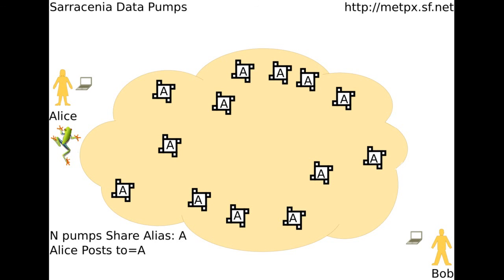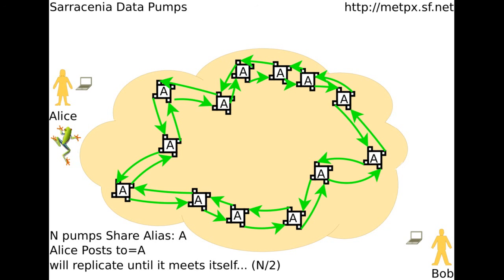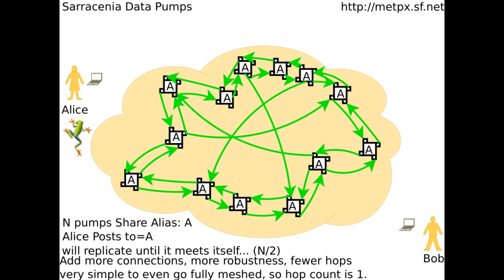In Saracenia, pumps can answer to more than one name. In this diagram, all the pumps answer to A as an alias. If Alice posts to A, the folder goes to all the pumps. Each pump just announces for its neighbors and propagates from pump to pump. In general, the more links are added, the fewer hops are needed to cover all the pumps. Copies happen from the first neighbor to get the data, and flow naturally over the fastest path, going wherever it hasn't reached, like water into a bucket.